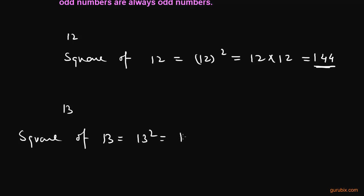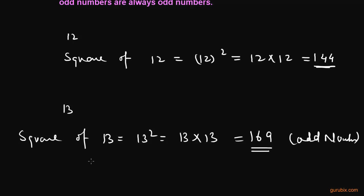13 squared means 13 cross 13, which equals 169, and this is an odd number. Therefore, the square of odd numbers is always odd. Thank you.